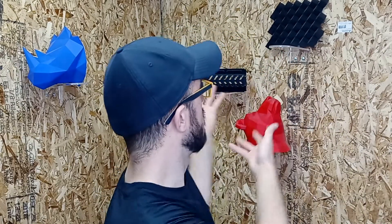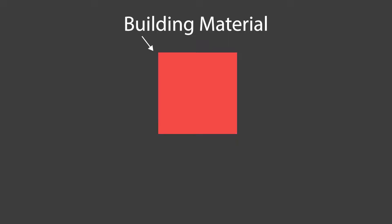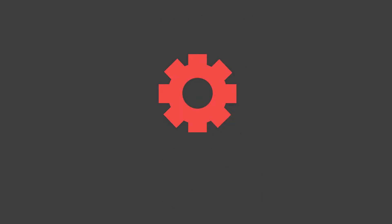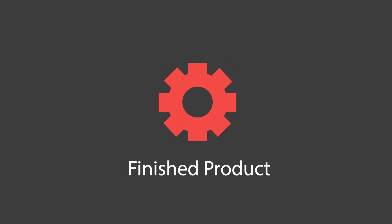If you want to make a physical thing, something like one of these, before 1985, the way you did it is you would get a block of something — a block of wood, a block of plastic, a block of metal — and then you would carve away at it. You would chip at it the way Michelangelo carved his statues, and then you would carve away until you got the product that you wanted.